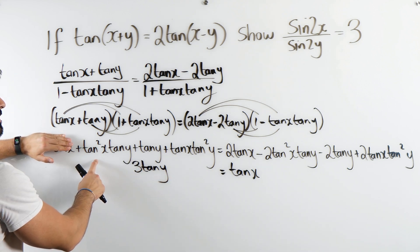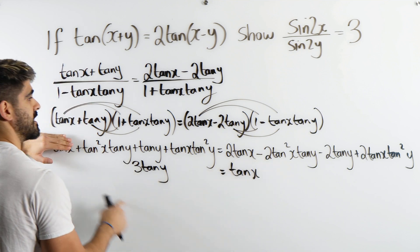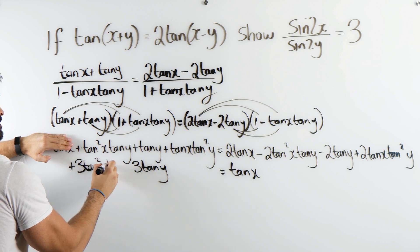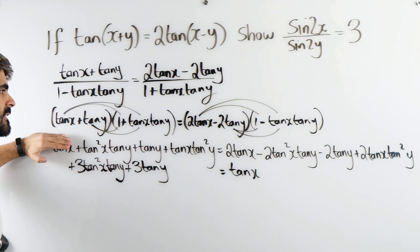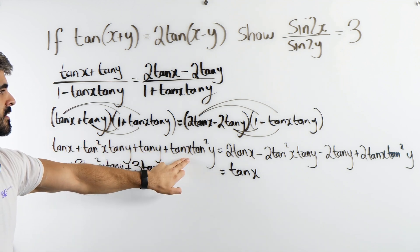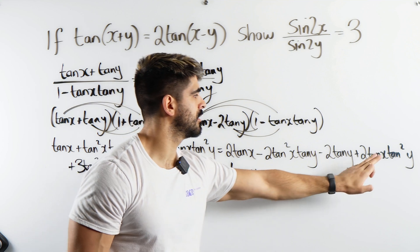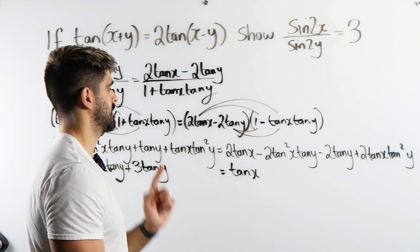Now this is done. This tan squared there, probably want to bring that here then, let's keep it positive. So we get 3 tan squared x tan y plus, and then this, I guess we'll move it over there. We just get tan x tan squared y.